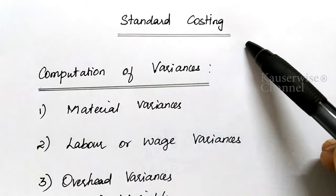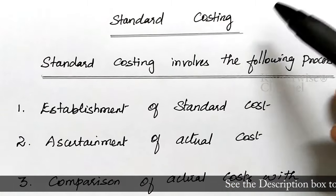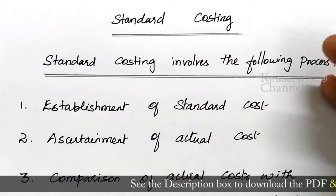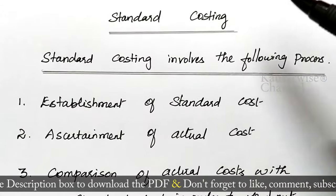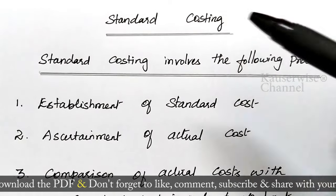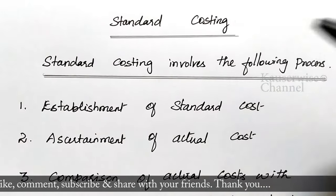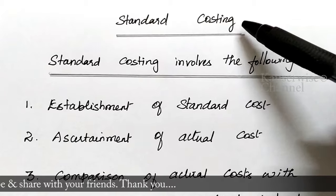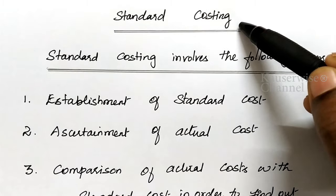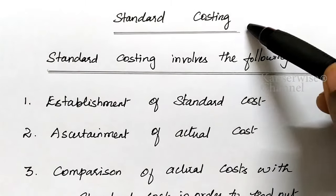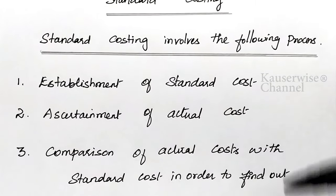Now let us see the concept of standard costing before we see the problem. In costing we have different topics. Standard costing is a technique of cost control — an effective management tool for planning, decision making, coordinating and control of the business. The main objective of standard cost is to ascertain the quotation and determination of price policy.